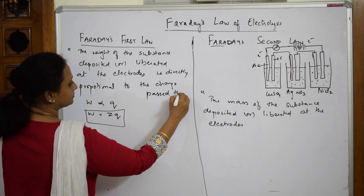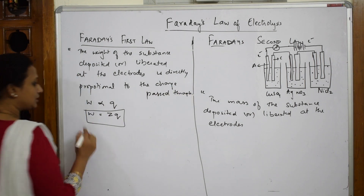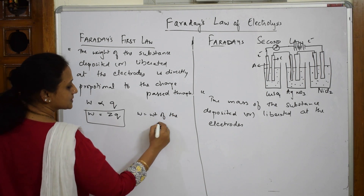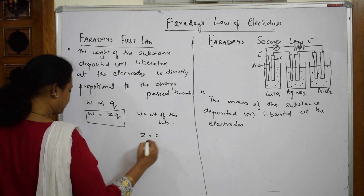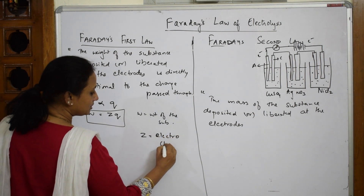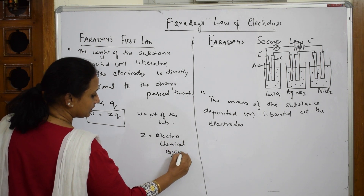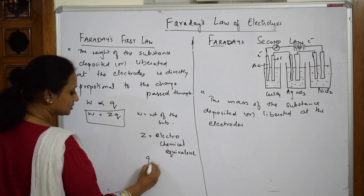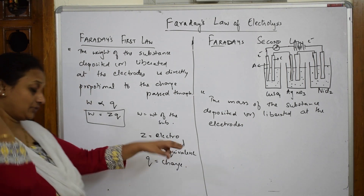So we write: W = zQ, where W is the weight of the substance, z is called the electrochemical equivalent, and Q is the charge or the amount of current passed.